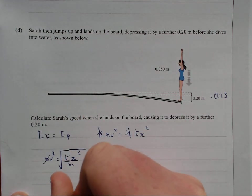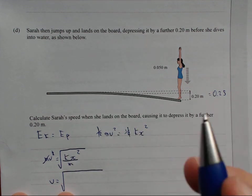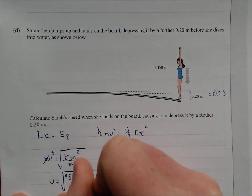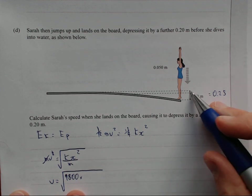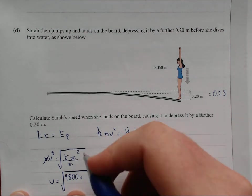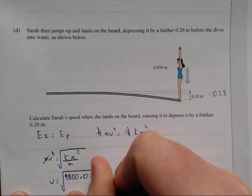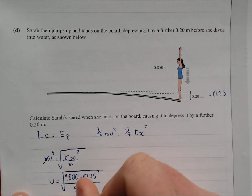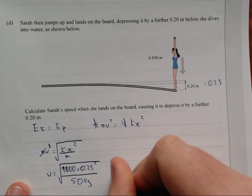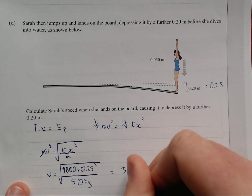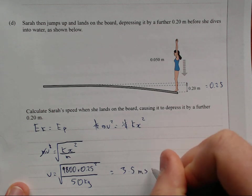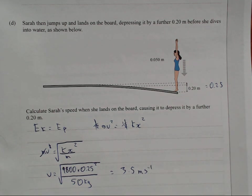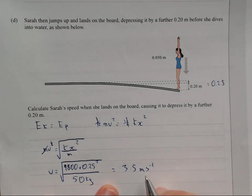So, I have velocity equals square root of k, 9,800. 9,800 times, so depressed by, fully depressed by 0.25 meters, 0.25 squared, divided by the mass, she's 50 kgs. Yes, she is. That's from over the page. And that'll give me 3.5 meters per second. So, I've rounded that up straight away because it has to be 2 significant figures. I rounded that up in my notes. I don't actually know what the actual answer was. But here we go.